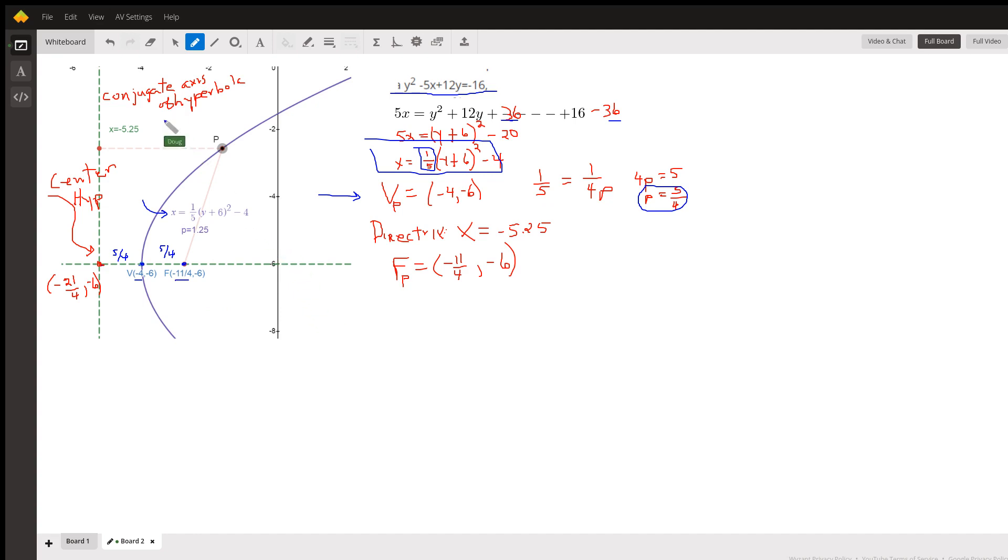Okay, and now here's the key. The conjugate axis of the hyperbola is the same as the directrix of the parabola. The directrix is this line right here, which is a distance of 5 fourths from the vertex. So this line is negative 4 plus a negative 5 fourths or negative 5 and 1 fourths, and this is the conjugate axis of the hyperbola.